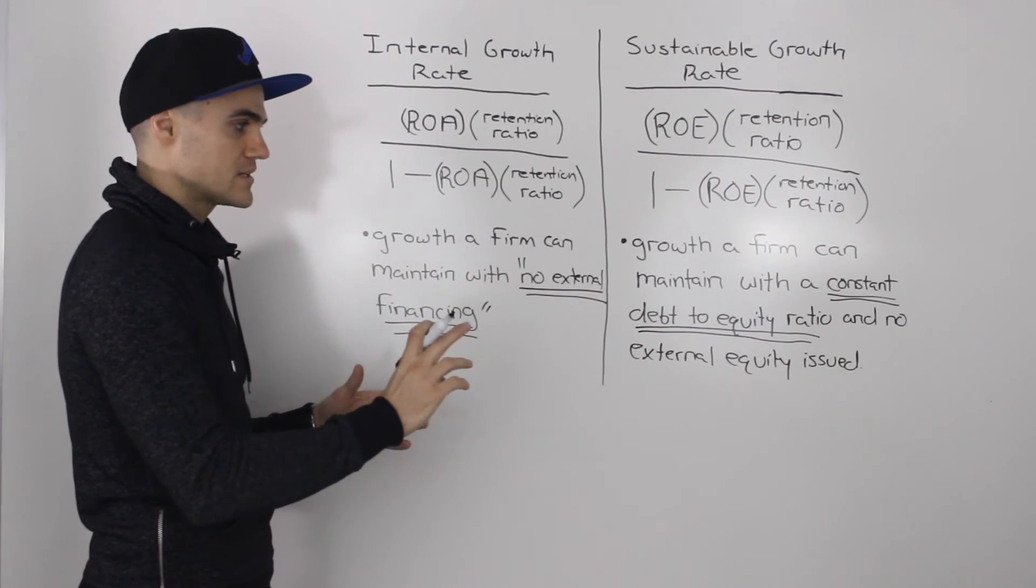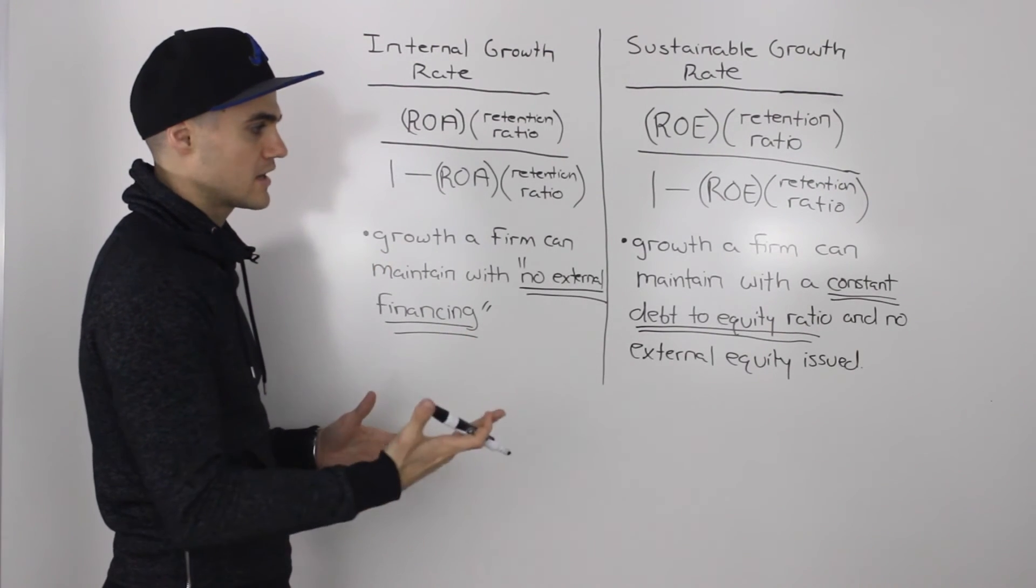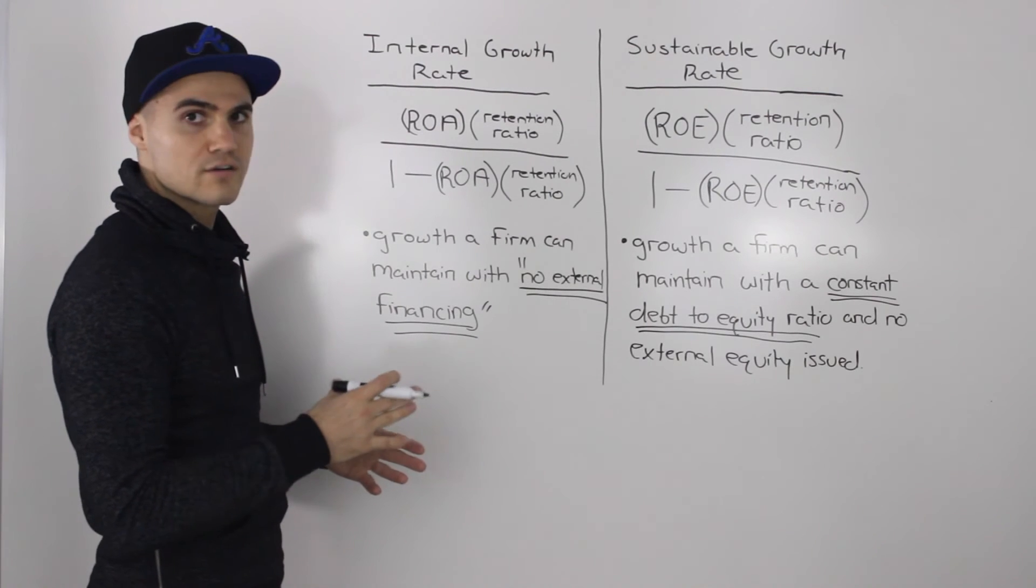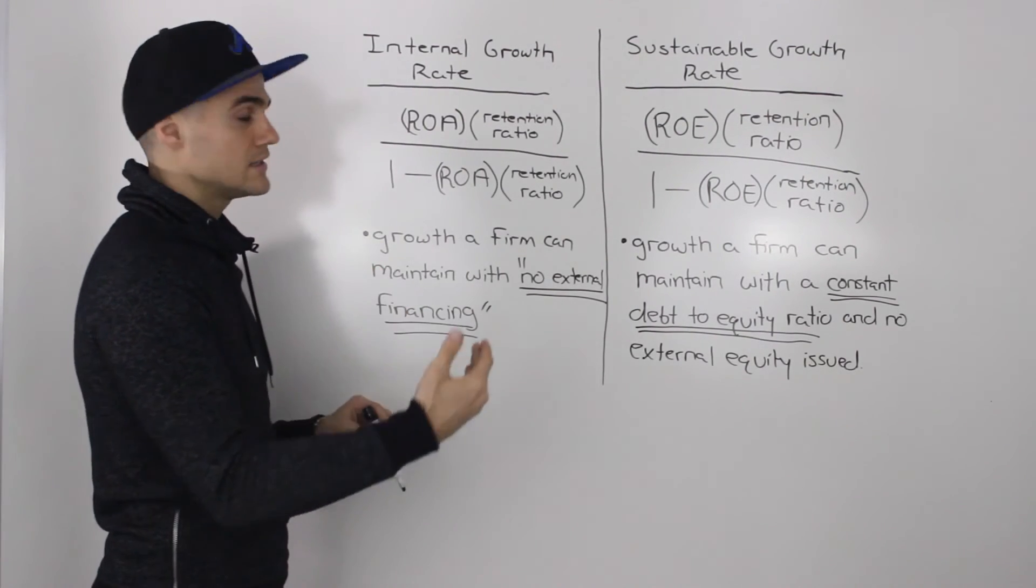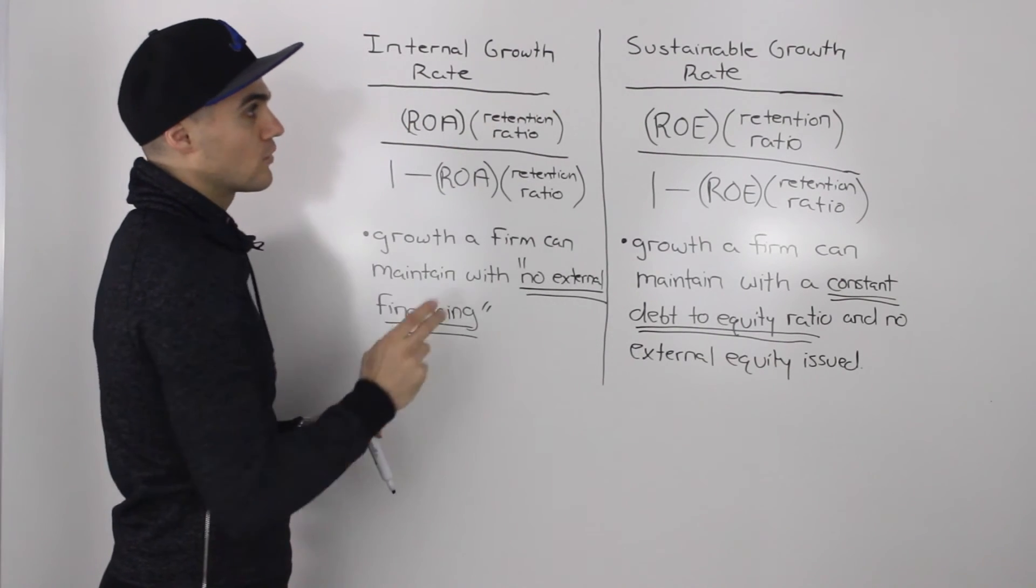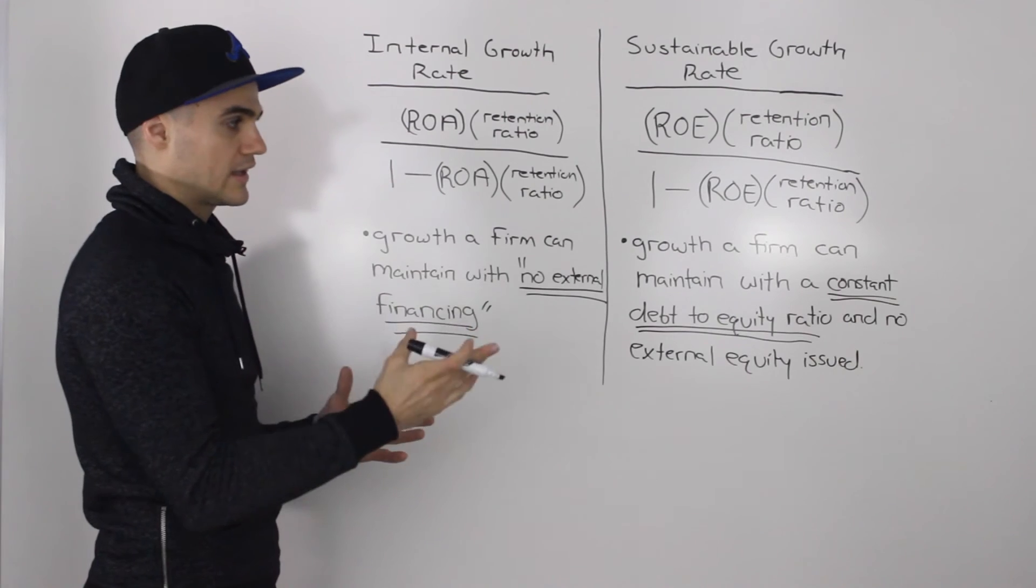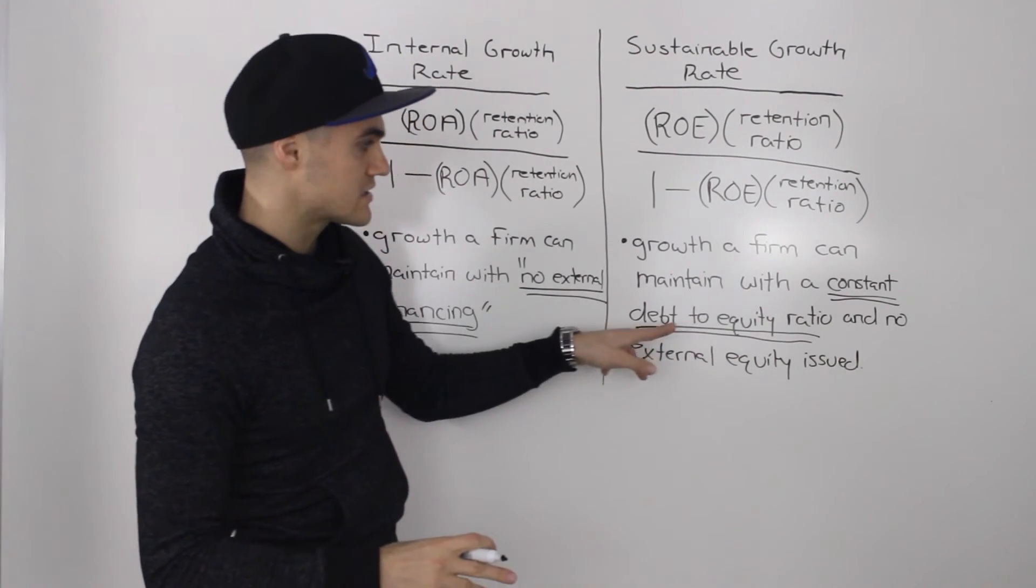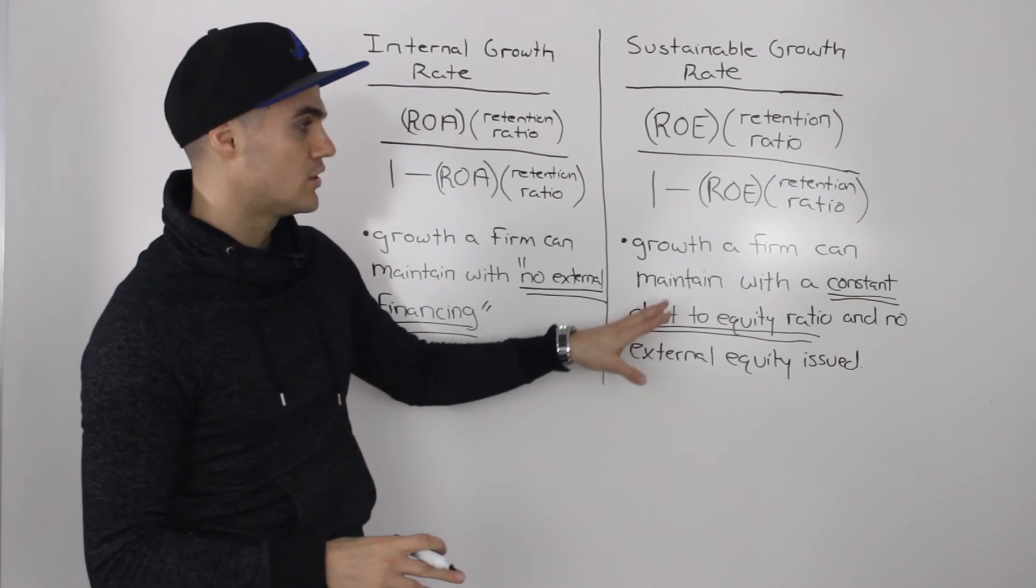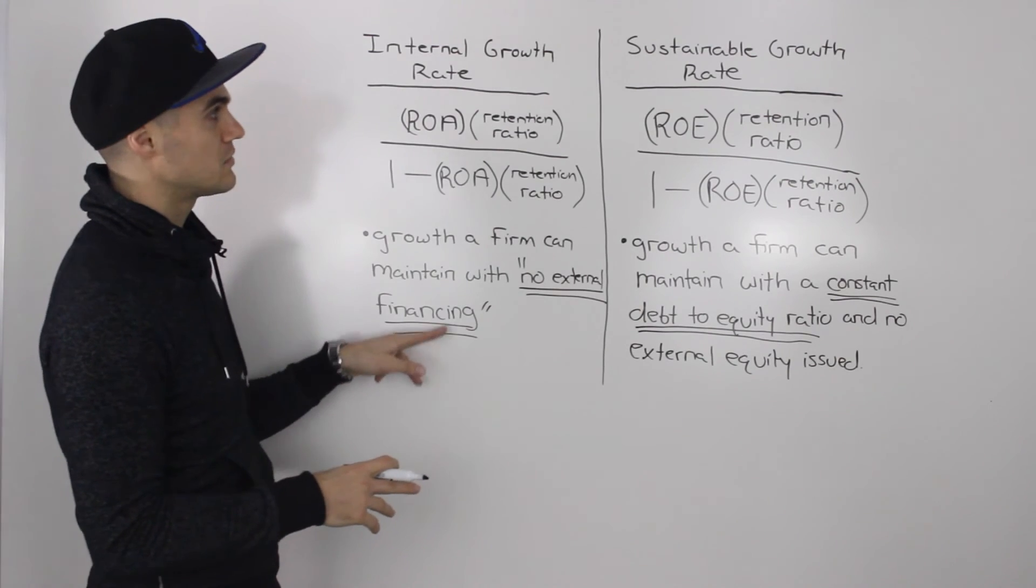So be careful with the differences. A lot of times questions won't tell you directly to solve for the internal growth rate or the sustainable growth rate. You're going to have to know by looking at the information you're given. So if you see this phrase constant debt to equity ratio, you can be pretty sure you're finding the sustainable growth rate. If you see no external financing, you can be pretty sure you're finding the internal growth rate.